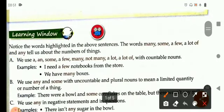Now children, you might have noticed the highlighted words in the above sentences. The words many, some, a few, a lot of, and any tell us about the number of things.